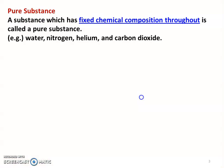Pure substance. Any substance is available in three forms: solid form, liquid form, and gaseous form. A substance which has fixed chemical composition throughout — in all three forms — is called as pure substance.